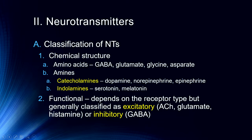Neurotransmitters can also be classified by function — generally into excitatory and inhibitory. Excitatory neurotransmitters include acetylcholine, glutamate, and histamine. Allergy drugs like Benadryl make you sleepy because they are antihistamines — by blocking that excitatory neurotransmitter, you become sedated. GABA is an inhibitory neurotransmitter, and sedative drugs such as benzodiazepines — Valium, Xanax, Ativan — exert their influence by increasing the efficacy of GABA.